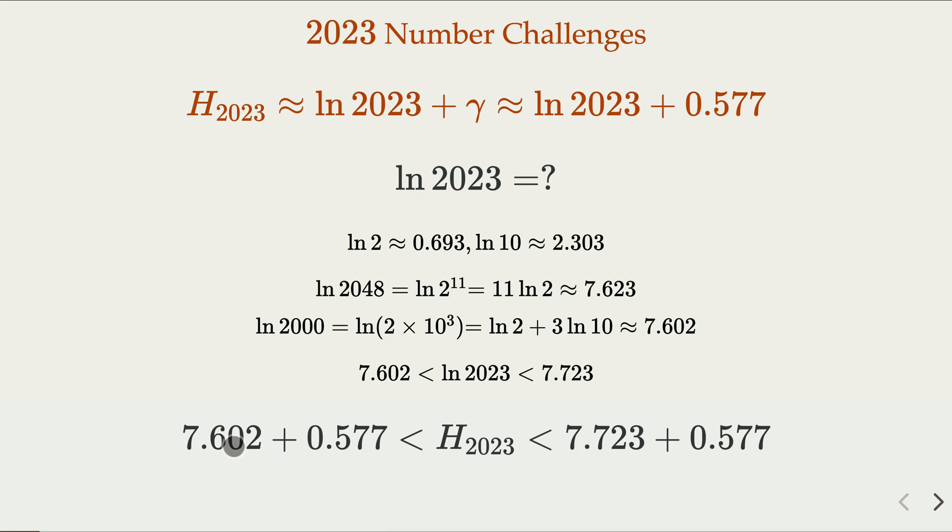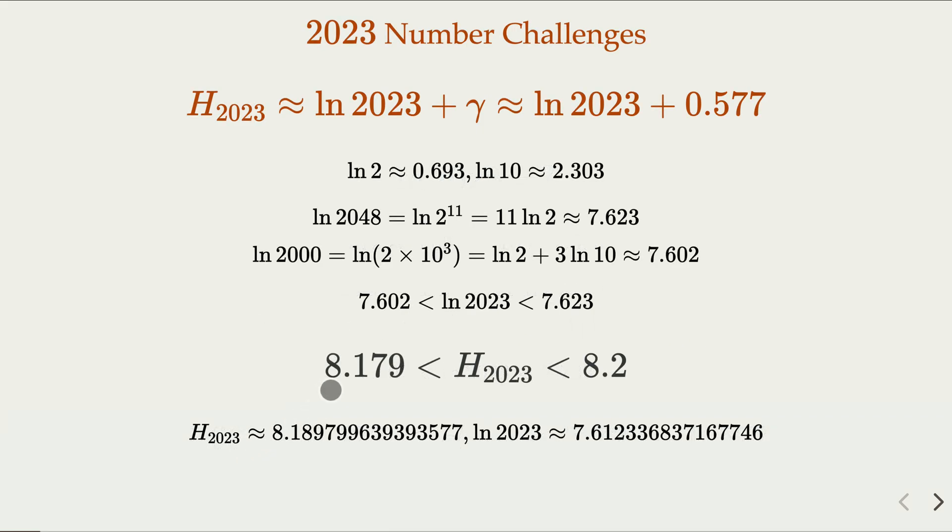It's going to be 8 something. So the value is going to be 8.179 to 8.2. Now here I do use a calculator, figured out that the harmonic sequence here is about 8.18. Indeed, it's a very close approximation we got without using the calculator.